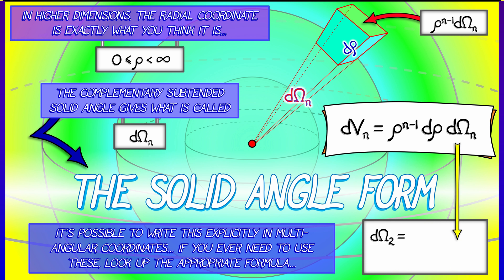So for example, in dimension two, you just have d theta for d omega two. In dimension three, you have d phi and d theta, but that solid angle form d omega three is sine phi d phi d theta.